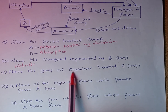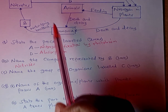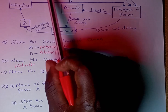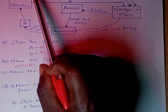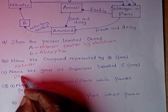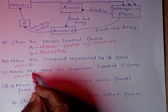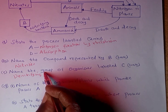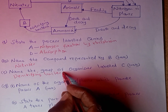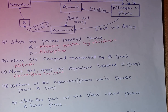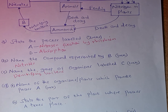Part C: name the group of organisms labeled C. These organisms are converting nitrates back to free nitrogen in the atmosphere. We call them denitrifying bacteria. An example is Pseudomonas bacteria.